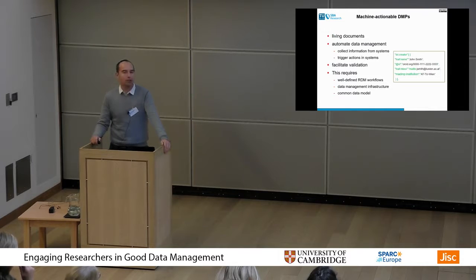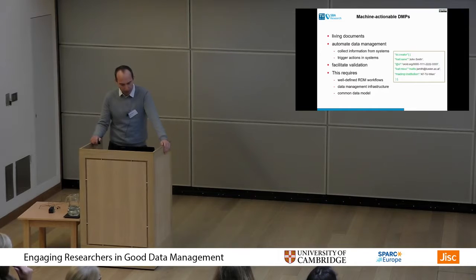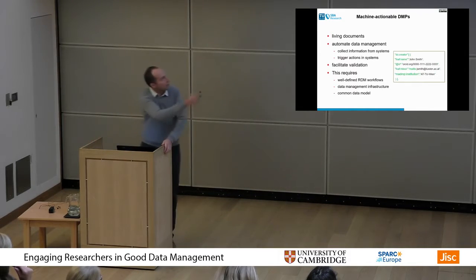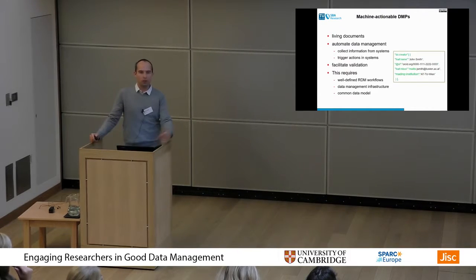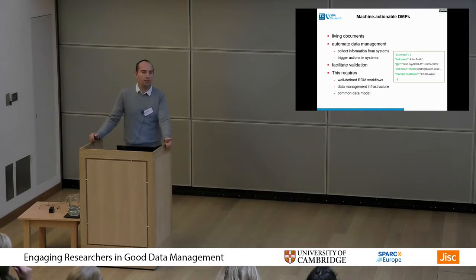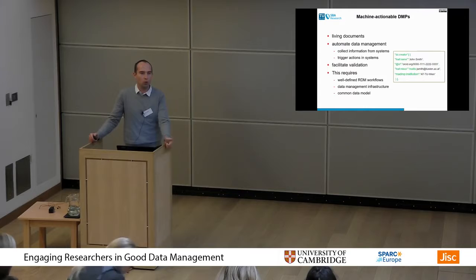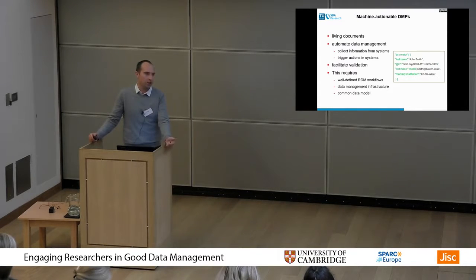This can be done using machine-actionable DMPs, which would be the living documents. To do that, we would need to develop a schema — moving away from written textual documents toward information modeling. We would also need two other components: well-defined workflows and systems. We need to know who is requesting what and when, and then we can put this information in the model and share it seamlessly between stakeholders.